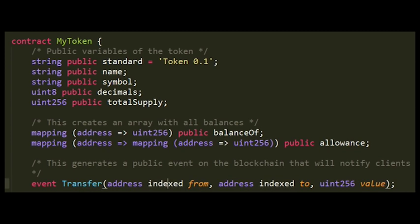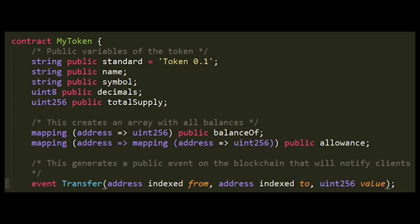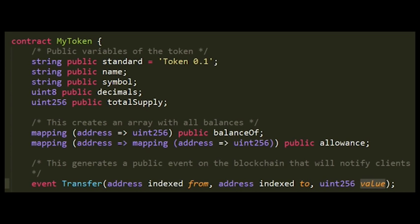The last item is an event called 'Transfer.' This event sends a notification to the outside world — to anyone following this contract. It contains the address of the sender (from), the address of the receiver (to), and the value, the amount of coins transferred during the transaction. Both the from and to addresses are indexed, meaning anyone watching this contract from outside the blockchain can search for those specific addresses.